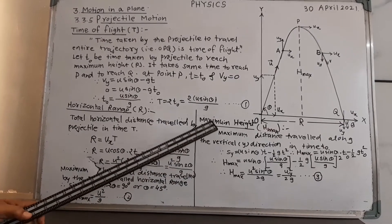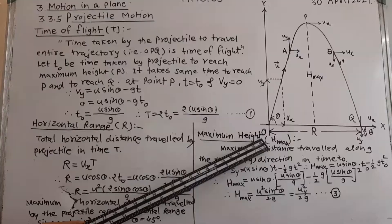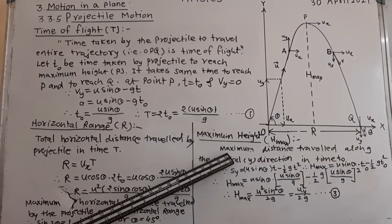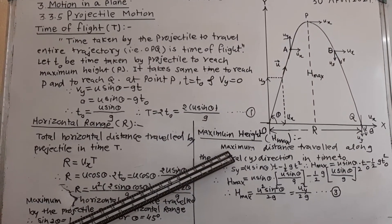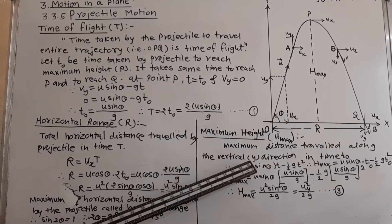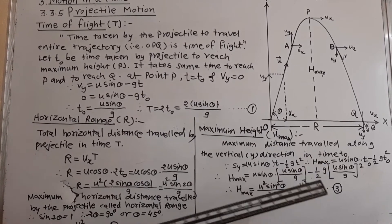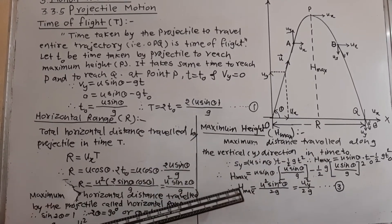Now, finally, we will consider the maximum height H max of the projectile. We calculated here, first of all, let us see what is maximum height. The maximum distance travelled along vertical direction, that is y direction, in time T0 is called maximum height. Here...